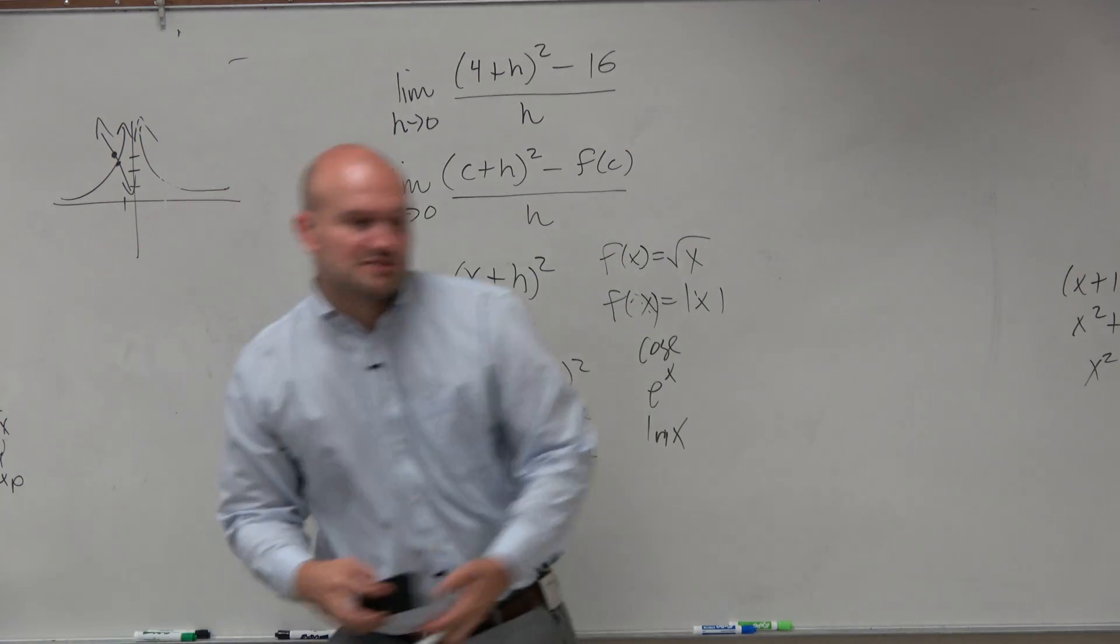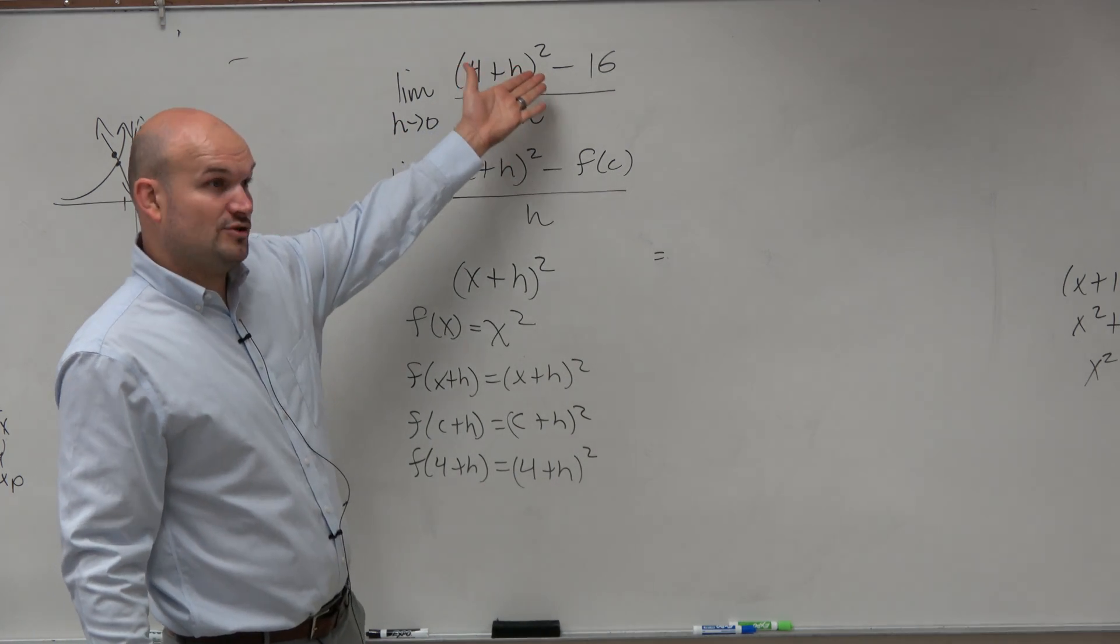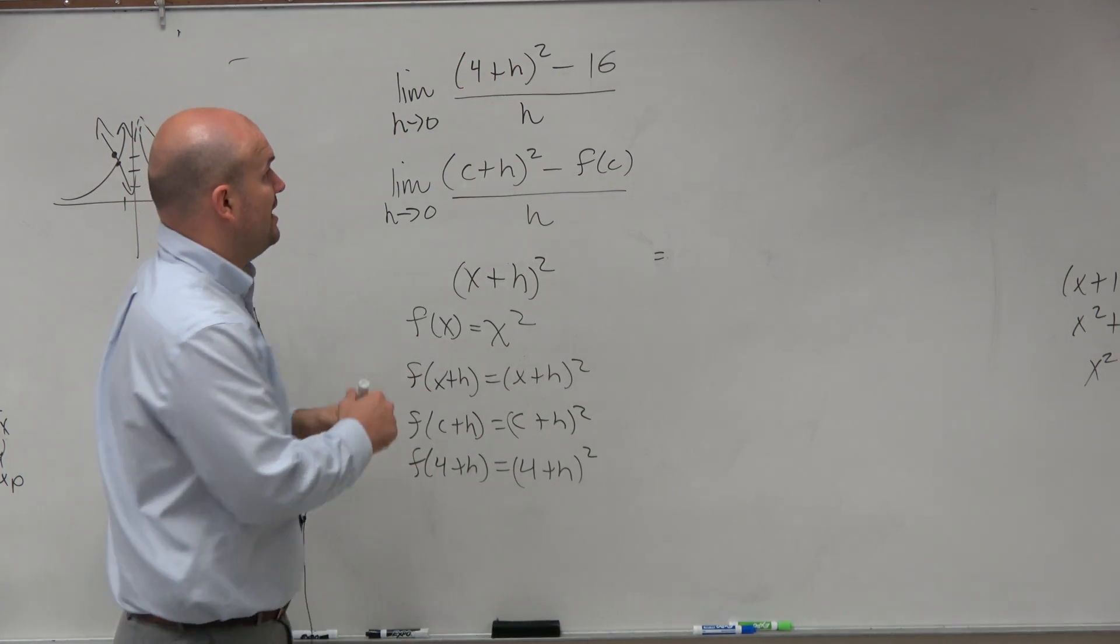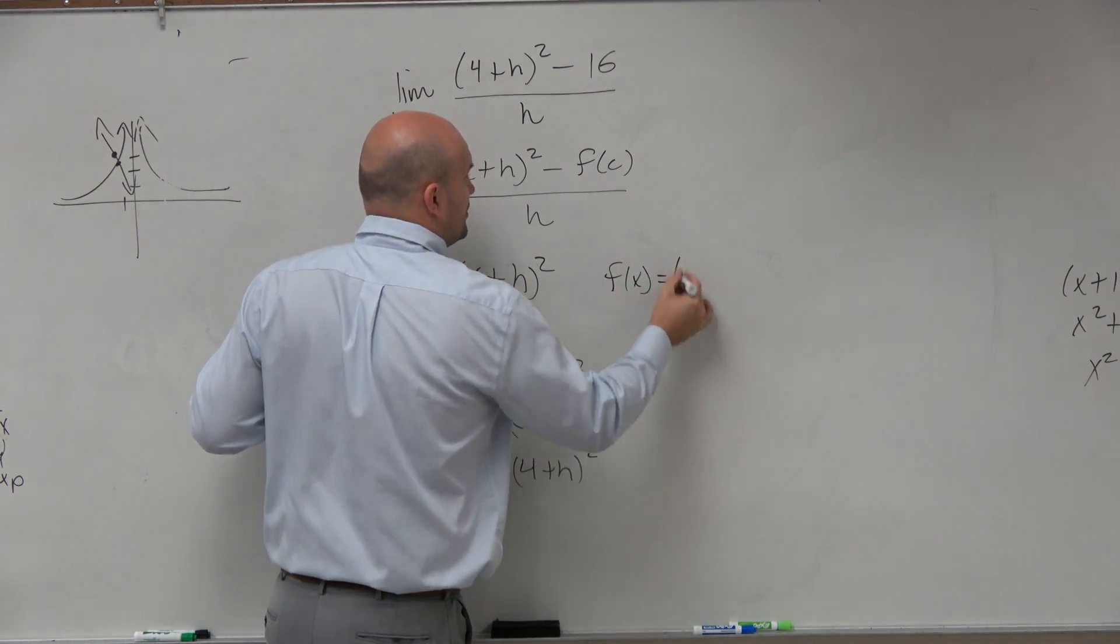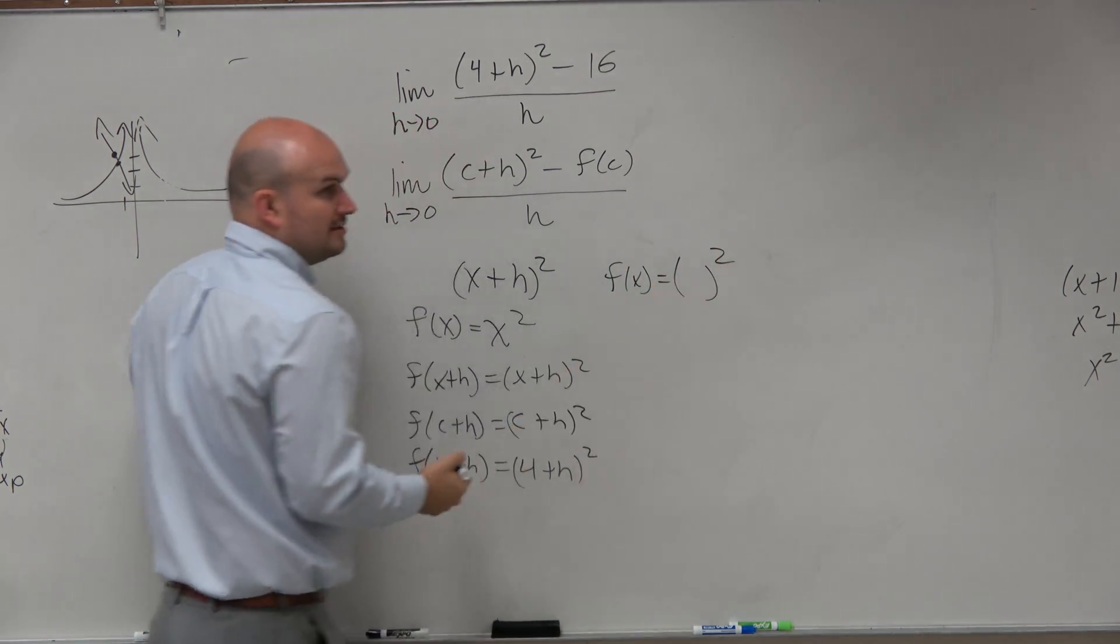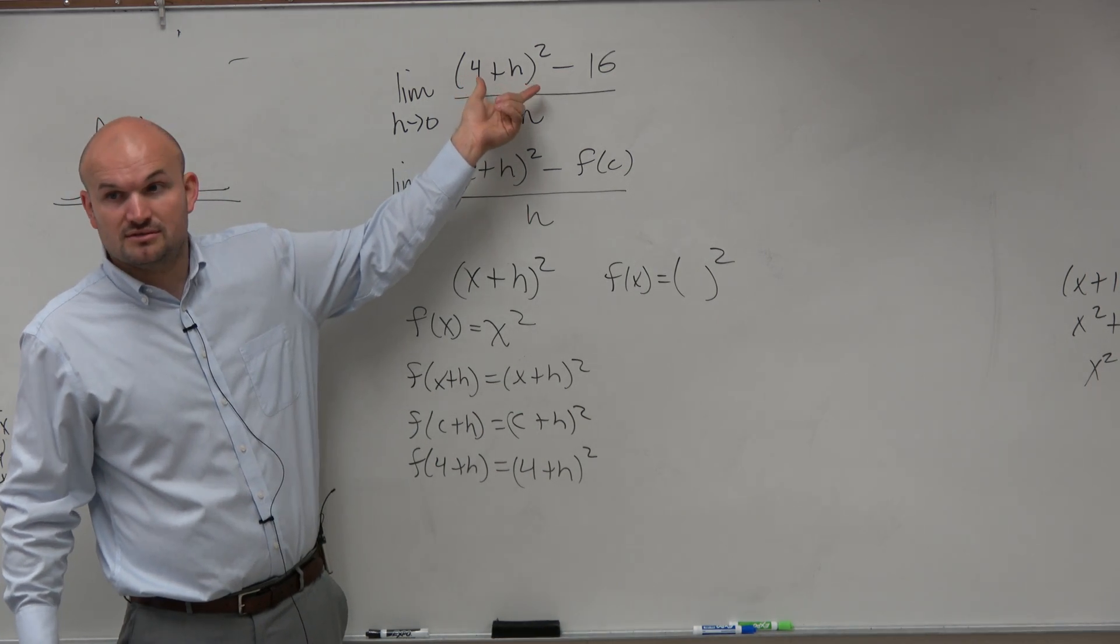We know it's not one of those crazy functions. We know that this is some function where it's squared. Right? So we have something squared. F of X equals something squared. Would you guys agree with me that's what that function is? Something squared.